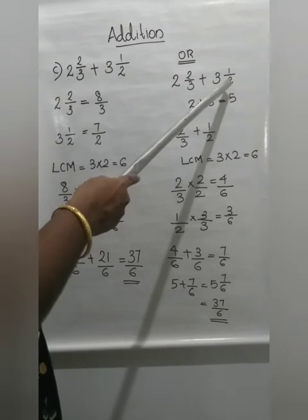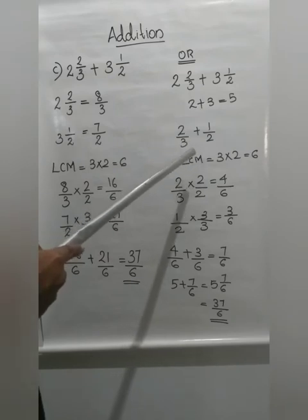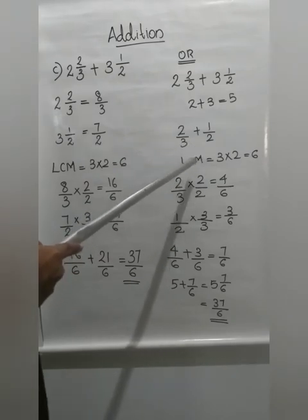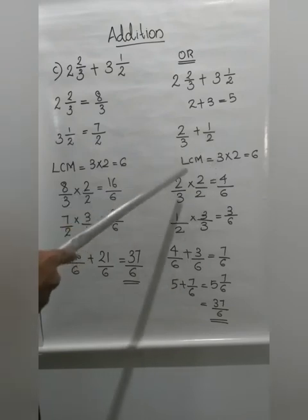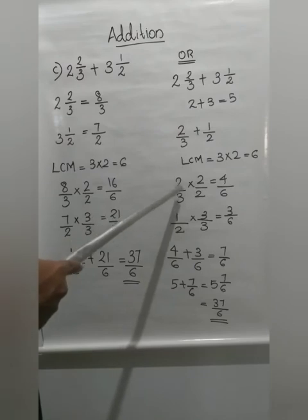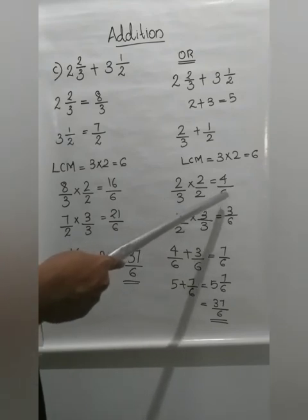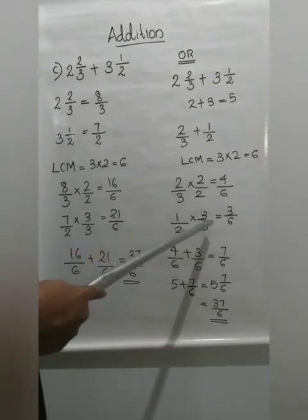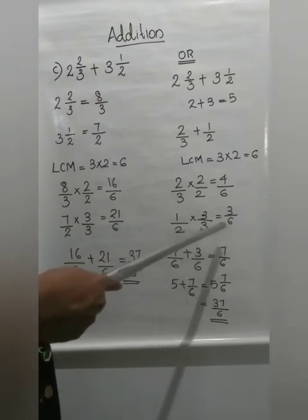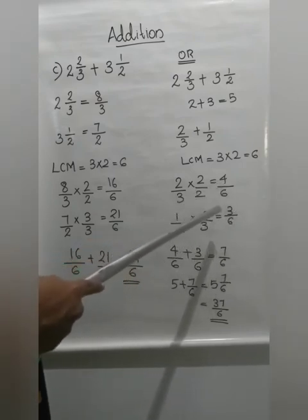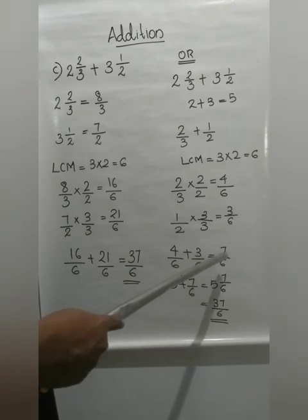The fraction parts are 2 by 3 and 1 by 2. Adding 2 by 3 plus 1 by 2 — this is an unlike fraction. So we convert to like fractions. LCM of 3 and 2 is 3 into 2 = 6. Converting 2 by 3: multiply by 2, giving 2 into 2 = 4 and 3 into 2 = 6, so 4 by 6. Converting 1 by 2: multiply by 3, giving 1 into 3 = 3 and 2 into 3 = 6, so 3 by 6. Now we can add: 4 by 6 plus 3 by 6 = 7 by 6.